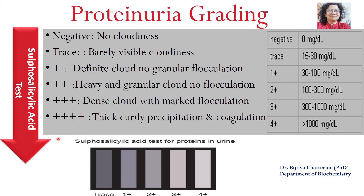When thick curdy precipitate and coagulation is seen, it is indicated by 4 positive signs, meaning protein concentration in urine is more than 1000 milligrams per deciliter. The sulfosalicylic acid test thus helps in grading the severity of proteinuria, as indicated by these plates along with the concentrations shown.